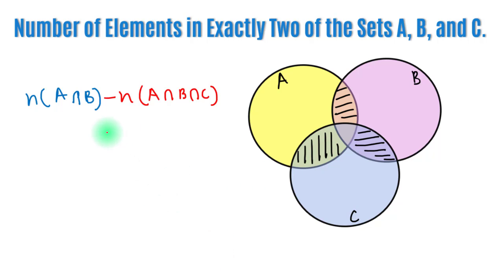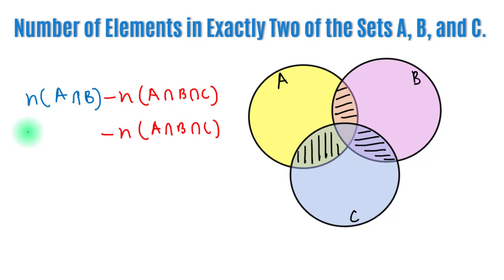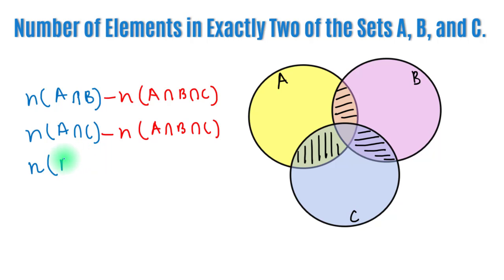we subtract the number of elements in A∩B∩C from n(A∩C). Similarly, we can find exactly B and C by using n(B∩C) minus the number of elements in A∩B∩C.